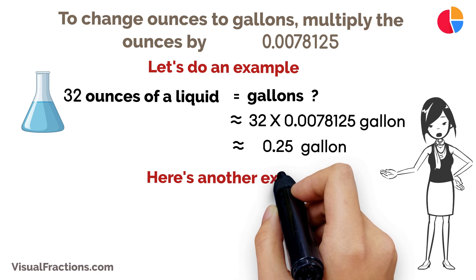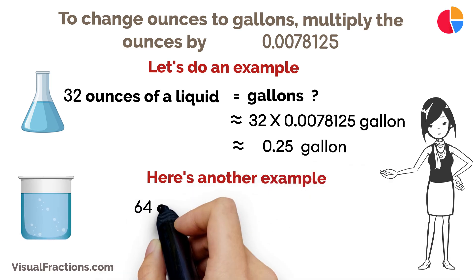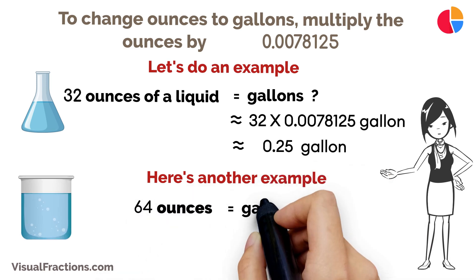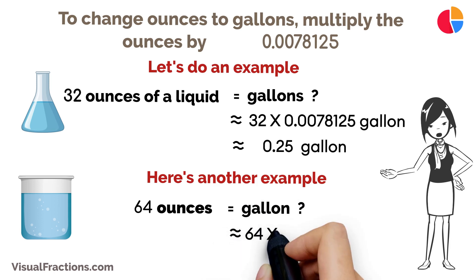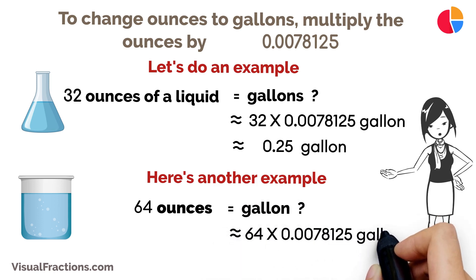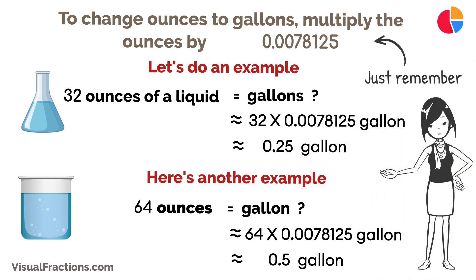Here's another example. If you have 64 ounces of something, to find out how many gallons it is, you do 64 ounces times 0.0078125. That equals about 0.5 gallons.